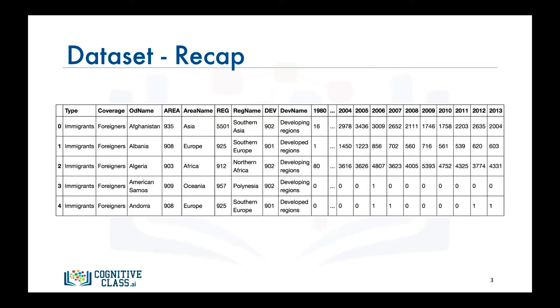Before we go over the code to do that, let's do a quick recap of our dataset. Recall that each row represents a country and contains metadata about the country such as where it is located geographically and whether it is developing or developed. Each row also contains numerical figures of annual immigration from that country to Canada from 1980 to 2013.